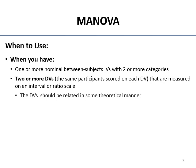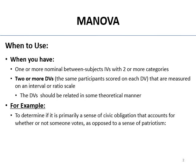Like a total intelligence score, for example. So is it primarily a sense of civic obligation that accounts for whether or not someone votes, or is it their sense of patriotism? If you hypothesize that the reason people vote is civic obligation and not really their sense of patriotism, this is a study that's got one DV — sort of.